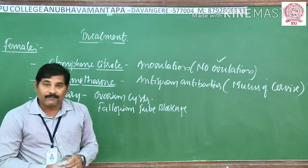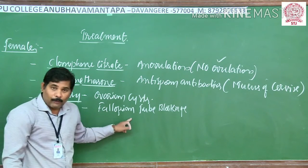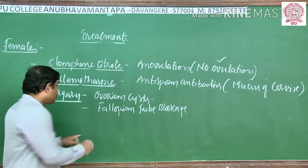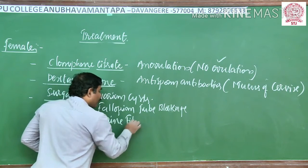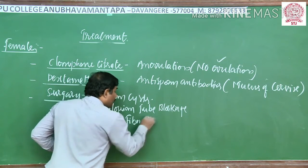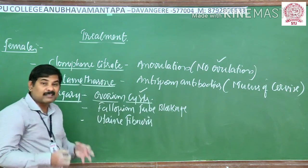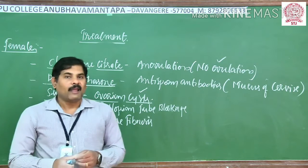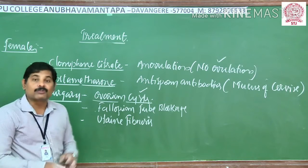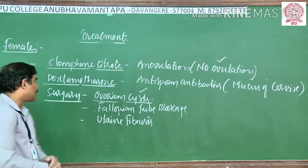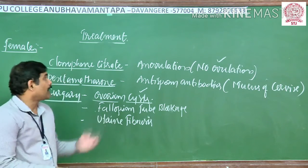There is also the problem of blockage of the fallopian tubes, problems in the uterus such as uterine fibrosis, and chances of occurrence of cysts within the ovary — ovarian cysts. Fallopian tube blockage, uterine fibrosis, and ovarian cysts present in a woman can all be rectified by simple surgeries. These are all the treatment methods available for female infertility.